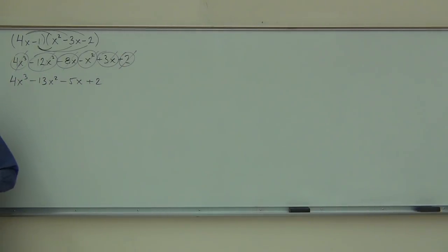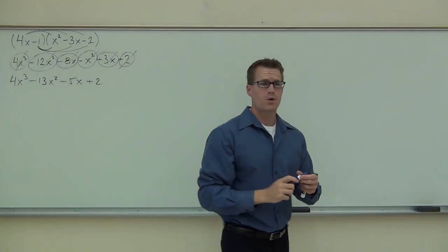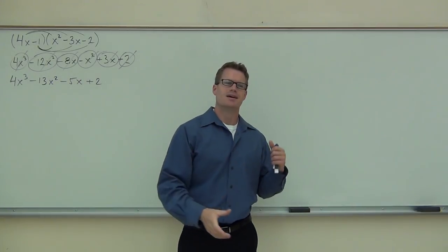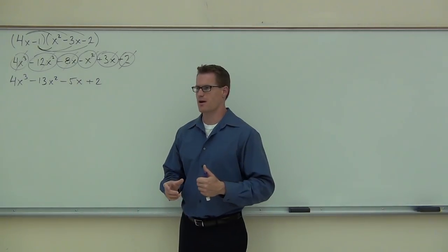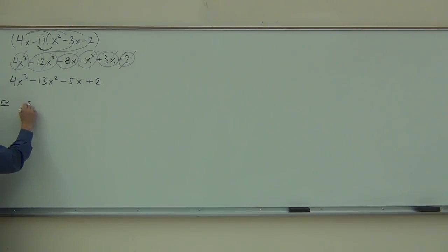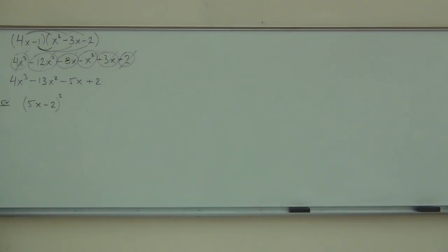We cross everything out — it's in the appropriate order. We like having this in descending exponents: x³, x², x to the first, and then a number. That's standard form for polynomials. Let's look at one more multiplication problem before going to division, which will take more time since you probably haven't practiced polynomial division in quite a while. The question is: is this going to be 25x² minus 4, or 25x² plus 4, or something different from those two things?